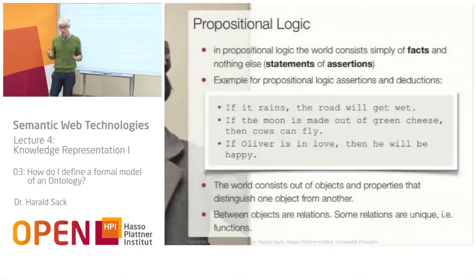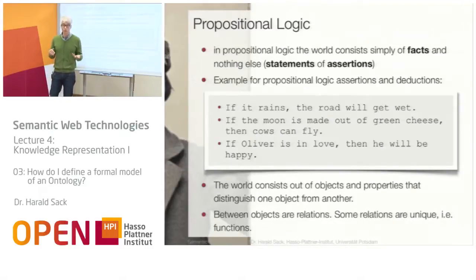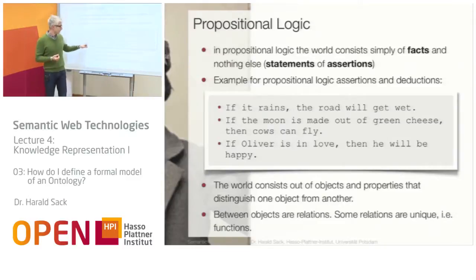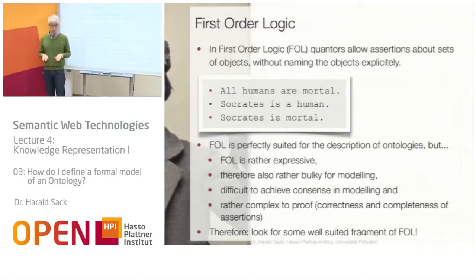The world does not only consist of single individuals. The world also contains classes — we had these when we defined a conceptual model for an ontology. We have to represent classes, and this is not possible with propositional logic. Therefore, we have to go one step further and look at first-order logic, which is much more powerful.